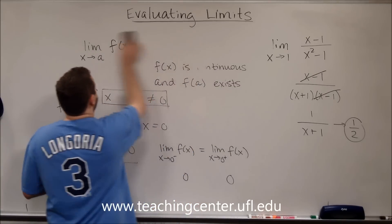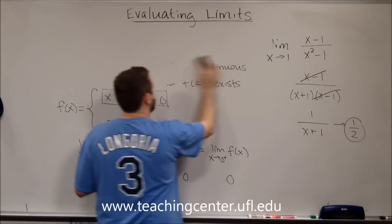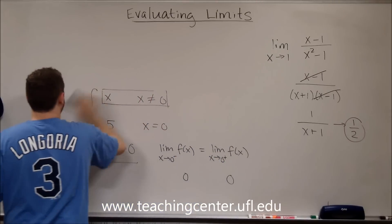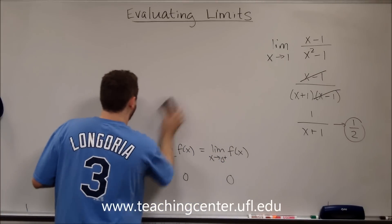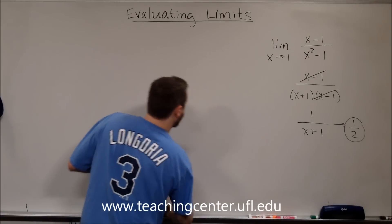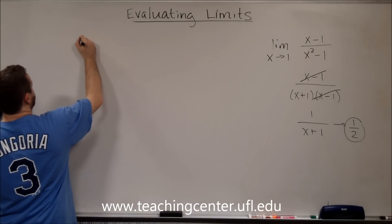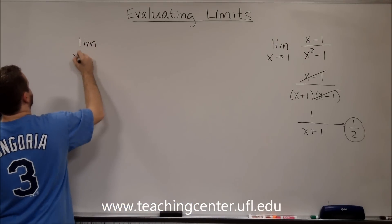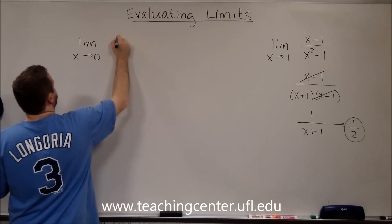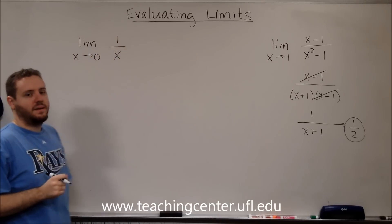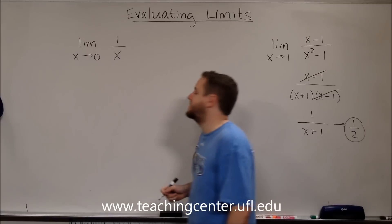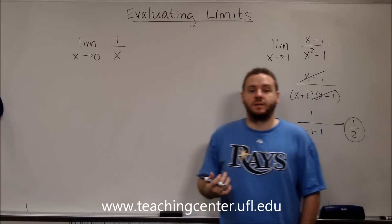So I want to point out that that's different from the following situation. Let's say we wanted to do the limit as x approaches zero of one over x. Now if we plug in zero, we're dividing by zero, which is undefined.